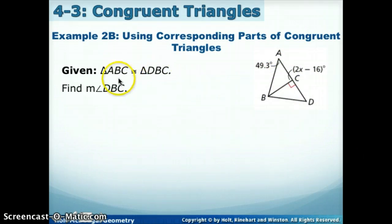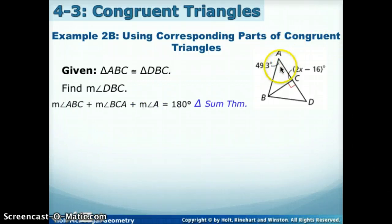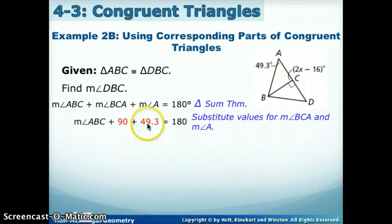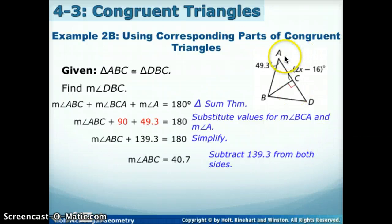So let's start with triangle ABC, and notice there are three angles: ABC, BCA, and angle A should all add up to 180 because it's a triangle, so triangle sum theorem. Now if I plug in the numbers that we do know, A is 49.3, and BCA is 90. If I simplify and combine my like terms, and then to get angle ABC by itself, we're going to subtract 139.3 from both sides, and we get that the measure of ABC is 40.7.